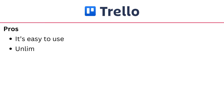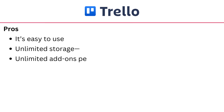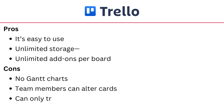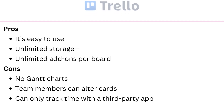The advantages of Trello are that it's easy to use, it has unlimited storage, and it has unlimited add-ons per board. The disadvantages are no Gantt chart, team members can alter cards, and you can only track time with a third-party app.